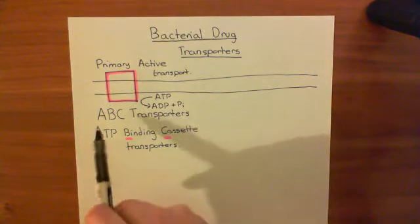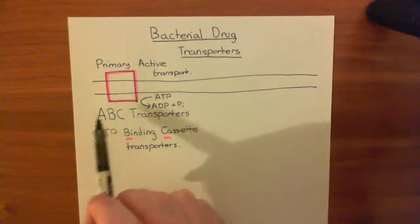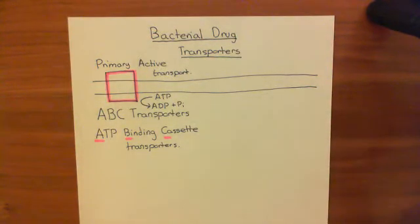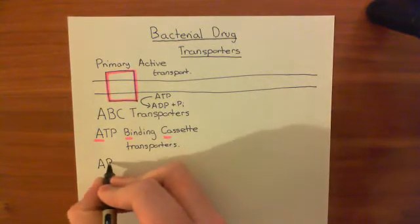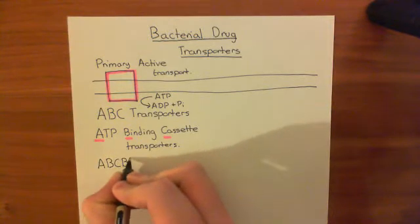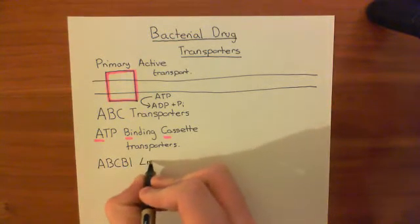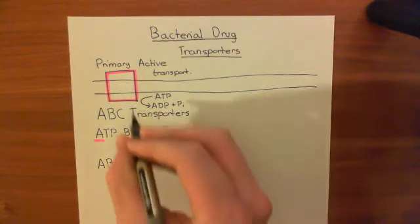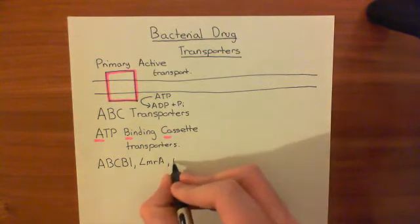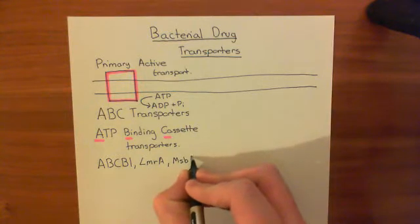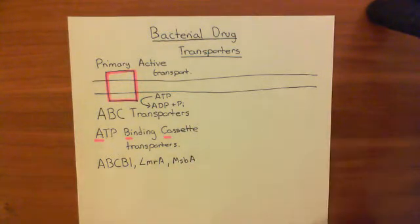The ABC transporters are not just one transporter — they are an entire family, and there are absolutely loads of them. Some examples we're going to see again and again are ABCB1, LMRA, and MSBA. These are all examples of ABC transporters which can transport drug molecules across a membrane.